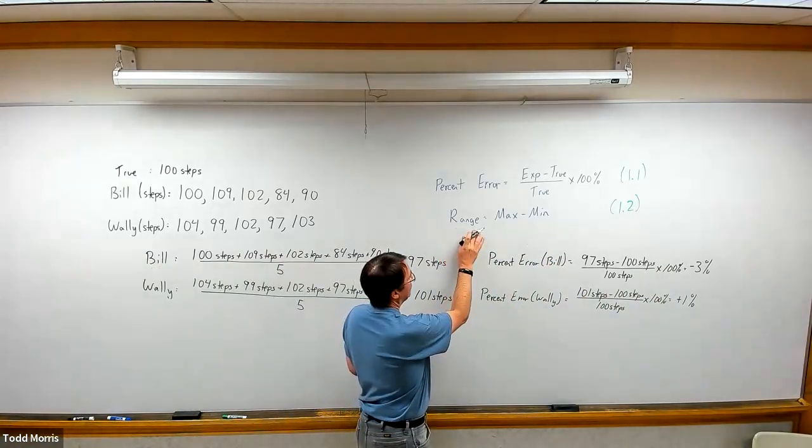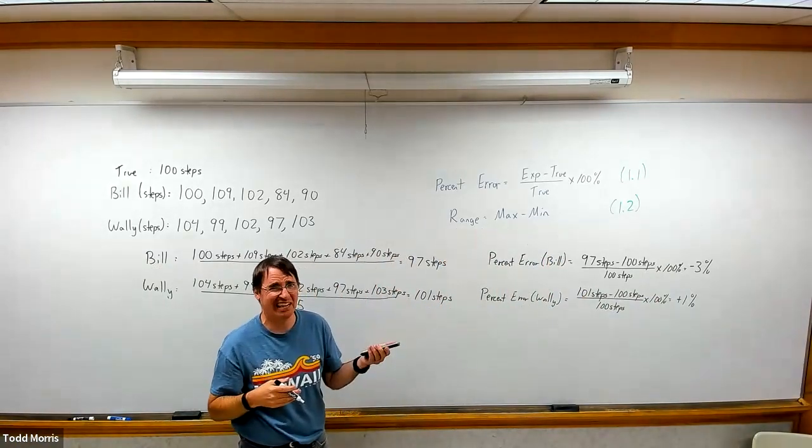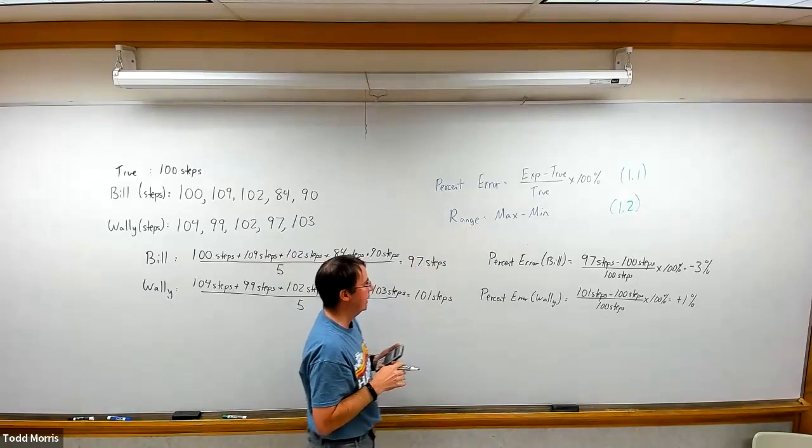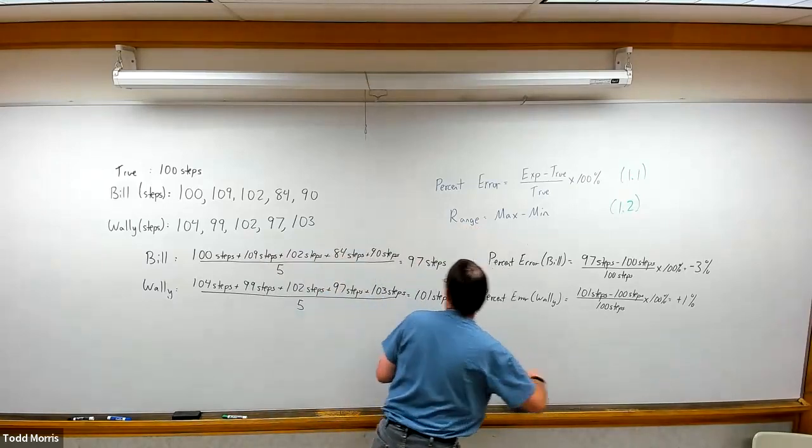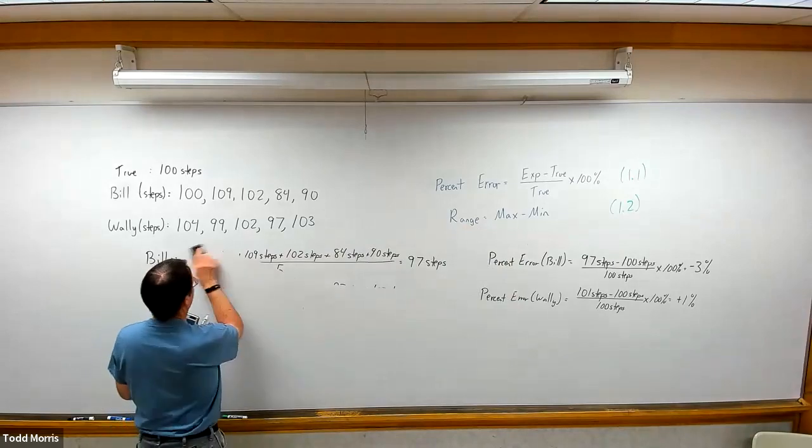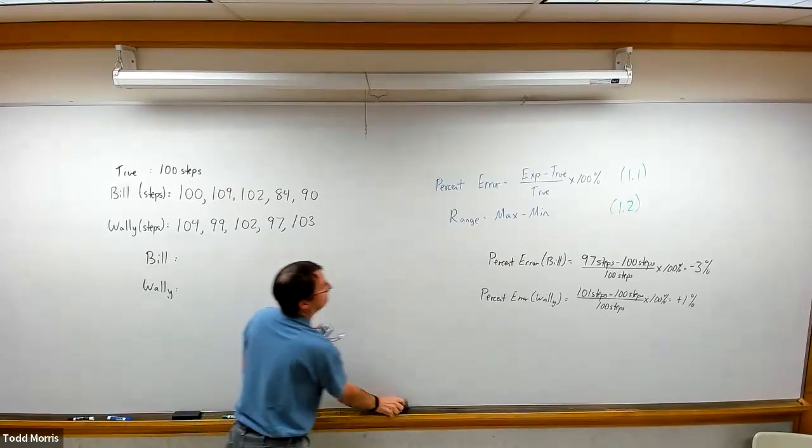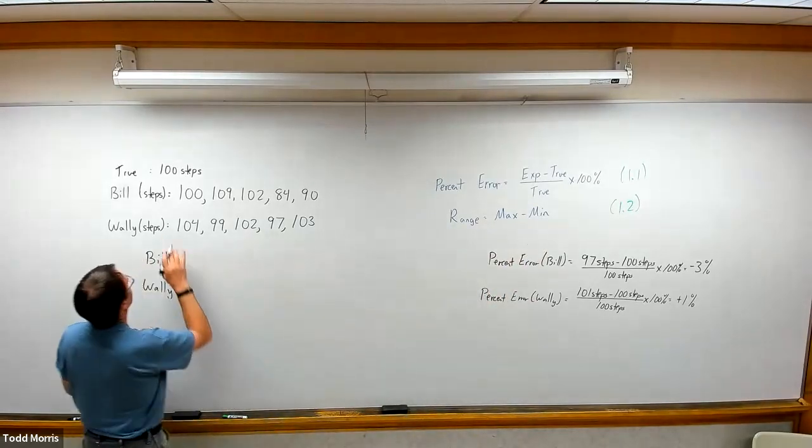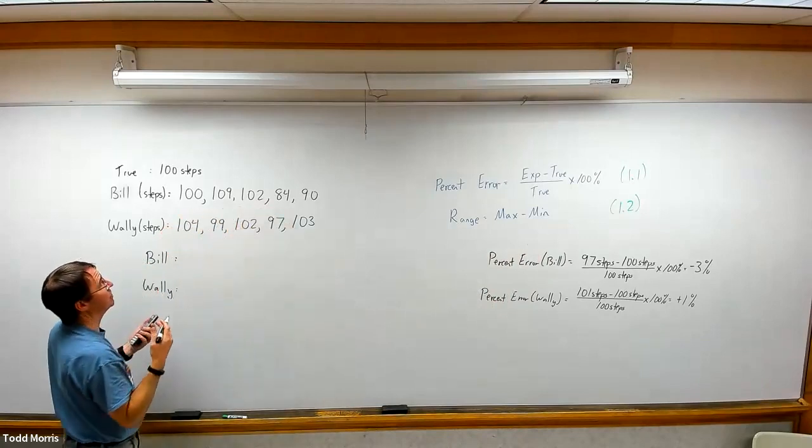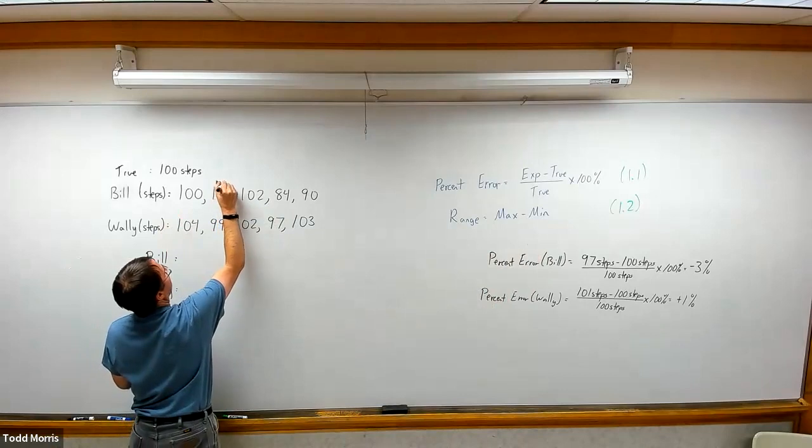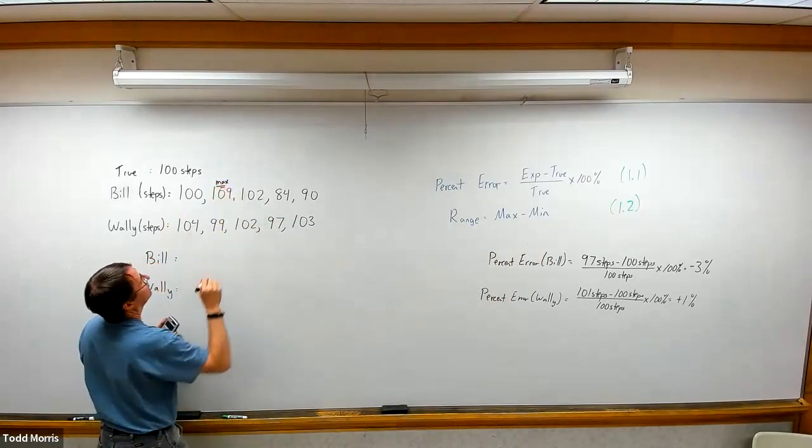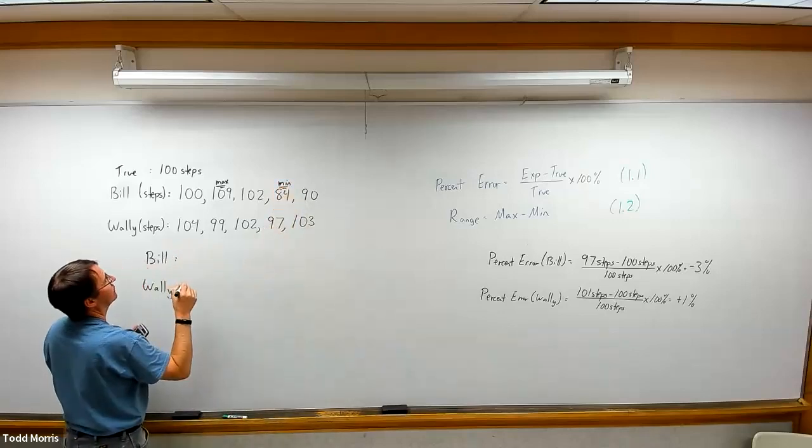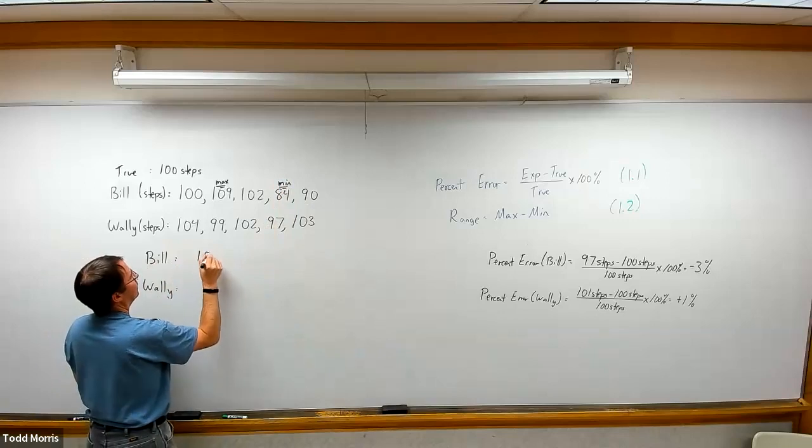Now secondly, to quantify precision, Wally's is more accurate but is it also more precise? Maybe Bill's is more precise. To quantify precision we'll use equation 1.2 which is range. Range is one of the simplest equations that we'll ever need to use. It's simply taking the highest value that you get and subtracting from that the smallest value. For Bill, his range, we look at the individual numbers, we find the largest number, 109, this is the maximum value for Bill. The smallest value looks to be 84, so that's the minimum value.